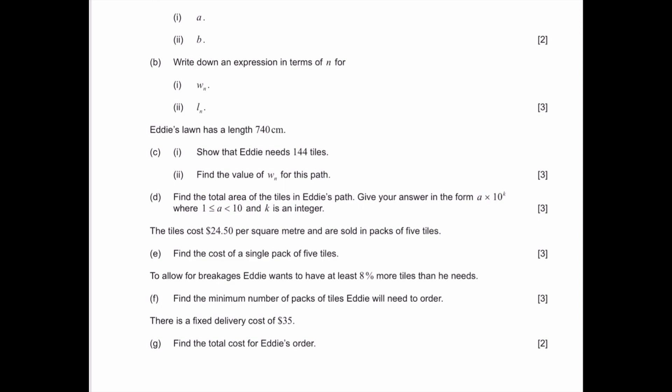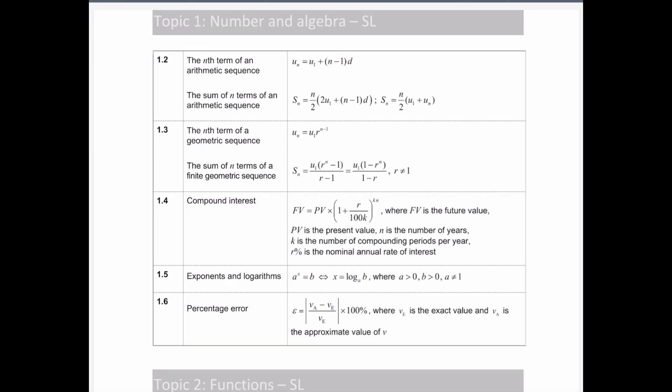The second part of the question says to write down an expression in terms of n for Wn and Ln. One of the things that we can do is notice that this is an arithmetic sequence question. In an arithmetic sequence, based on our formula packet, under topic one they will give you the formulas for both arithmetic and geometric sequences and series. We are going to work with the nth term of an arithmetic sequence: un equals u1 plus n minus 1 times d.